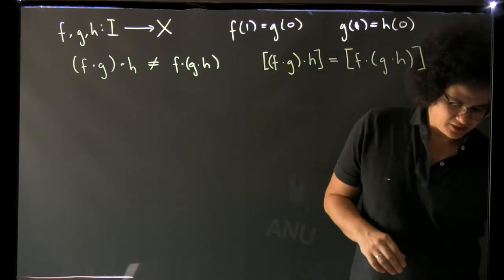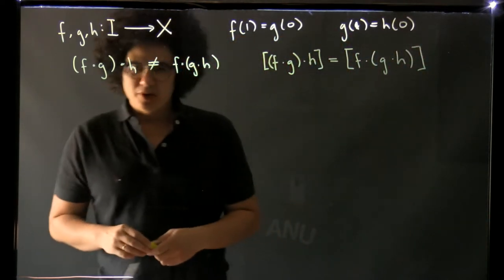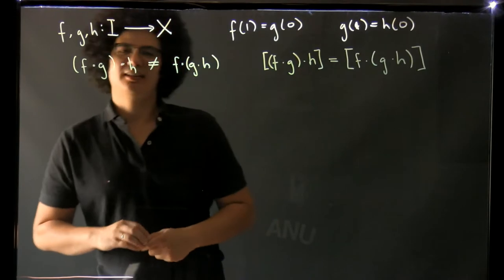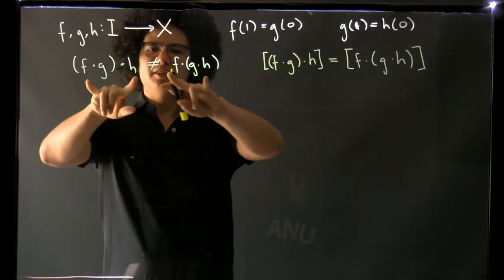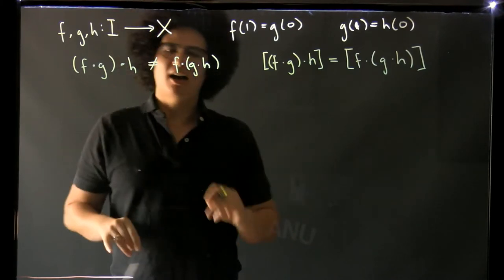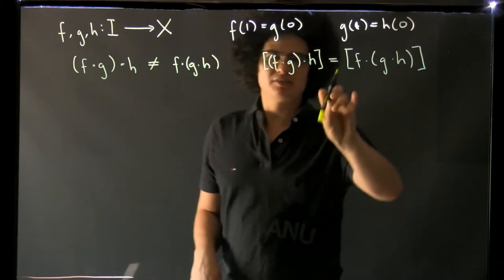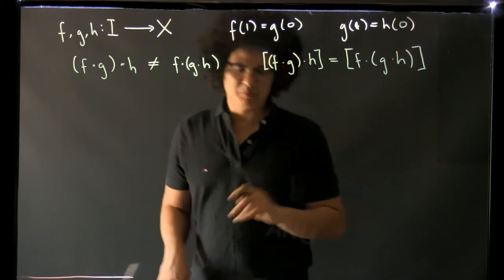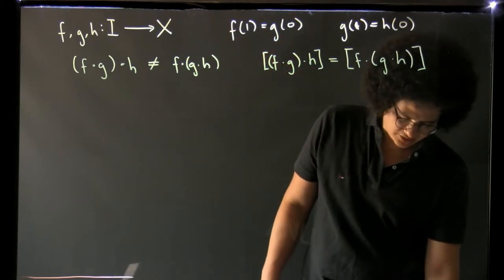Now previously we saw reparametrizations give us homotopies and in fact these two paths are reparametrizations of each other which is what gives us our associativity because we can build a homotopy between reparametrizations of the same path.